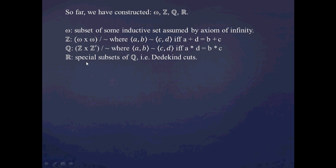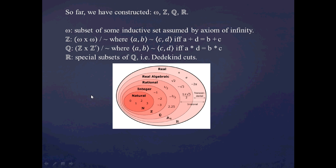Remember what Dedekind cuts are — they're just special subsets of the rational numbers. Now I'm sure that at some point in high school, everyone was introduced to the idea that you can start with the natural numbers, and then you have the integers, where the natural numbers are a subset of the integers, and then the integers are contained within the rational numbers, and then the rational numbers are contained within the real numbers, and then you might have the complex numbers, hyper-complex numbers, and so forth. This is suggesting that each one is a subset of the next higher set in the hierarchy.